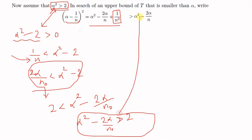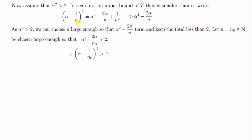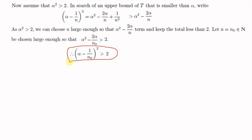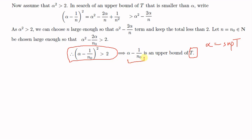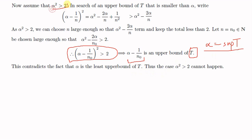Using this result, replacing n with n₀, we get (alpha - 1/n₀)² greater than alpha squared minus 2·alpha/n₀, which is greater than 2. So (alpha - 1/n₀)² is greater than 2, meaning alpha - 1/n₀ is an upper bound for set T. Since alpha is the supremum — the least upper bound — of T, we have found a number less than alpha that is also an upper bound of T. This contradicts the fact that alpha is the least upper bound, so our assumption that alpha squared is greater than 2 is wrong. Alpha squared cannot be greater than 2.